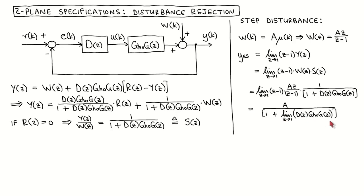To minimize the steady-state output value due to the disturbance, we have to maximize this limit. In general, the larger the controller gain, the smaller the effect of the disturbance on the steady-state output. If we want the effect of the disturbance on the steady-state output to be zero, then the loop transfer function should have at least one pole at Z equal to 1, which means the limit tends to infinity and the steady-state value is then zero.